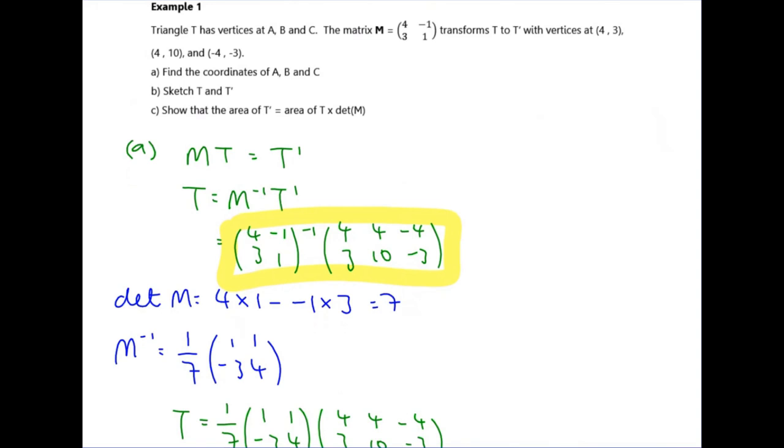Next, we've been asked to sketch the original triangle and the image of T. T dash has vertices at 4, 3. I'm just going to roughly guess these. 4, 10, somewhere up here. And minus 4, minus 3. So that's down here. OK, so this one is T dash. That's just the coordinates from the question. I'm going to do a separate diagram rather than it messy on the same one.